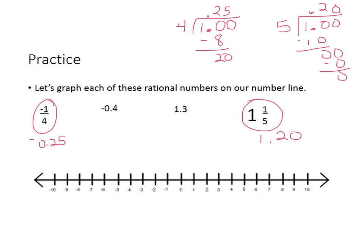If we were to mark these on our number line: negative 25 hundredths is not very far — it's not all the way to negative 1 yet — so it goes right about here. Negative 4 tenths is like negative 40 cents, which is really close to negative 25 hundredths but worth less because it's farther to the left. Then 1 and 3 tenths is positive and past the 1, so it goes right about here. And 1 and 20 hundredths is actually smaller, so it's a little bit closer. Those numbers are extremely close together.